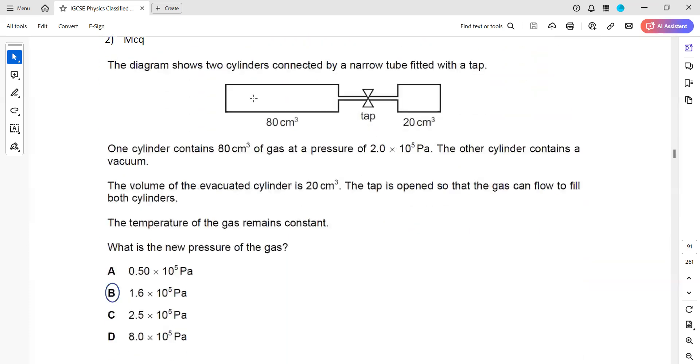Now the diagram shows two cylinders connected by a narrow tube fitted with a tap. So one cylinder contained 80 cm³ of a gas at a pressure of 2 × 10⁵. The other cylinder is vacuum. So in the beginning there's no gas here. Then the volume of the evacuated cylinder is 20 cm³ and the tap is opened so that it can flow. So the temperature remains constant.